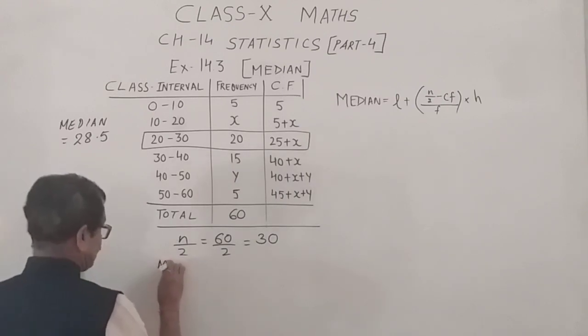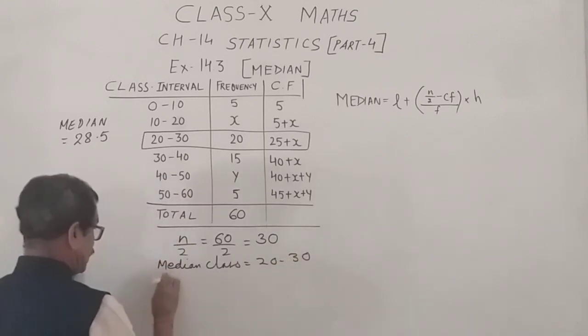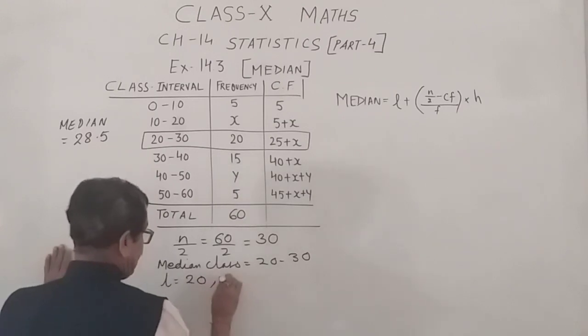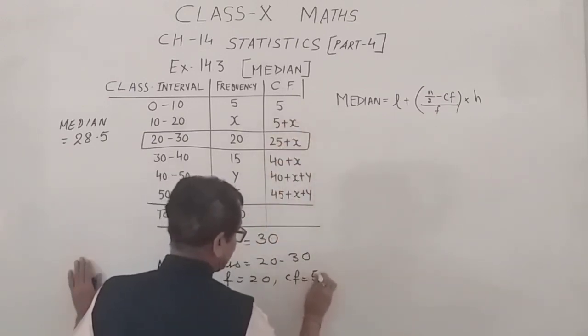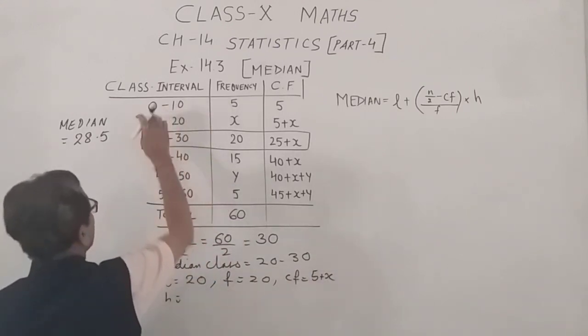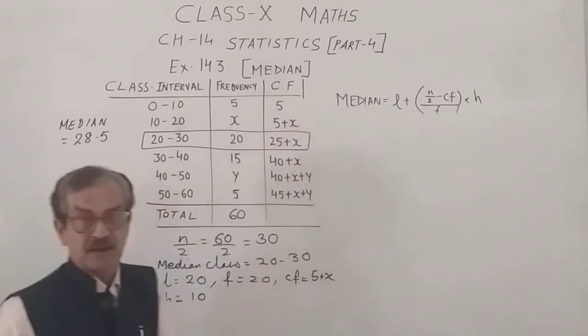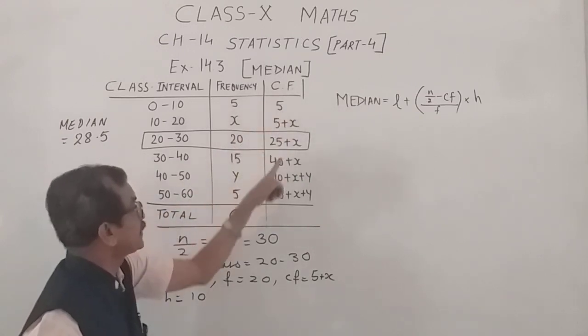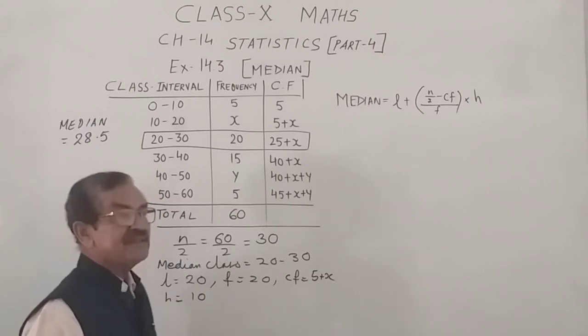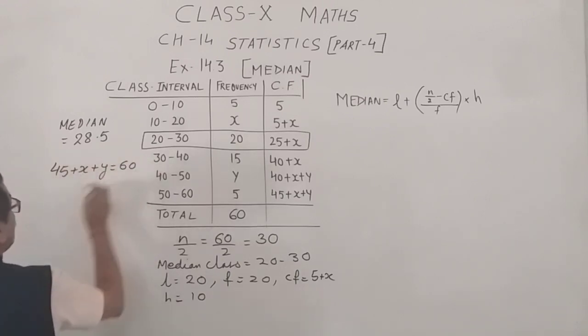28.5 lies between 20 and 30. So, this is our median class. Always highlight this median class so that you do not do any kind of error. So, here I can write my median class is 20 to 30, meaning that the lower limit is 20, lower limit of the median class. Frequency is 20 of the median class. CF, the preceding frequency is 5 plus x and the class size is 10 minus 0, 10. We have all the terms with us. We have the median with us. We will simply apply the formula. But before that, we have the number of terms as 60. And here, the number of terms is 45 plus x plus y. So, we will form one simple equation from here. That is 45 plus x plus y is equals to 60. Meaning, x plus y is equals to 15, which I will write the first equation.